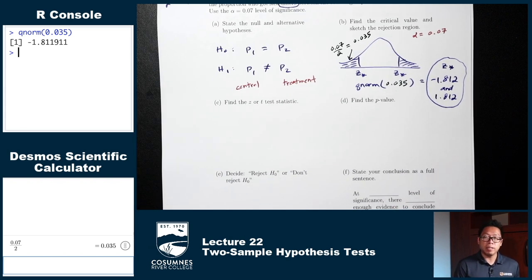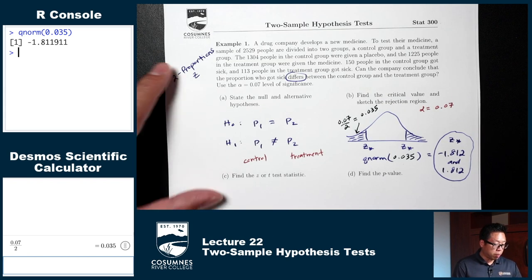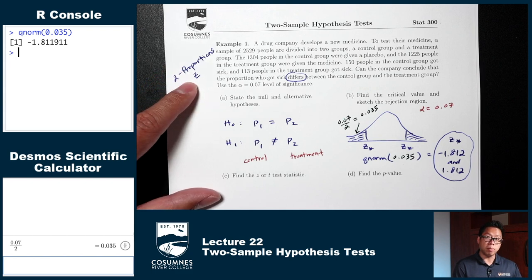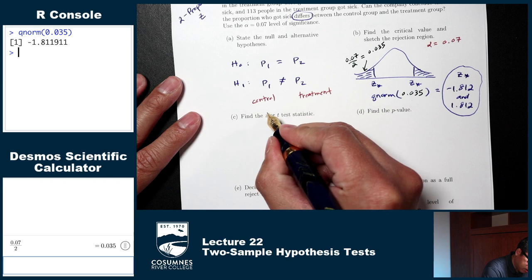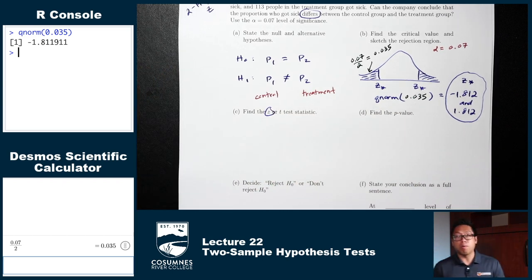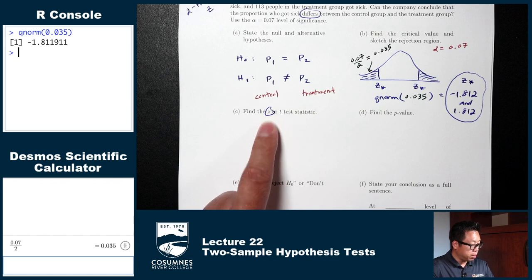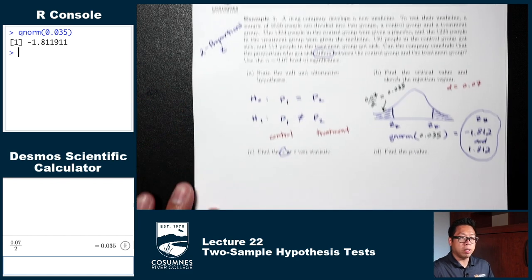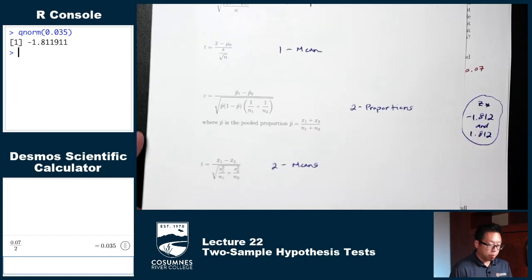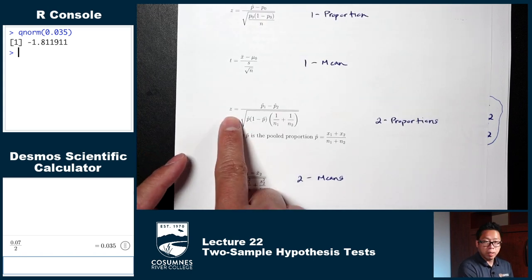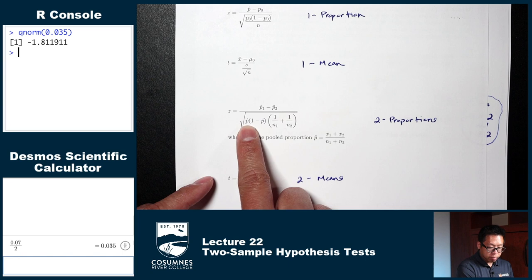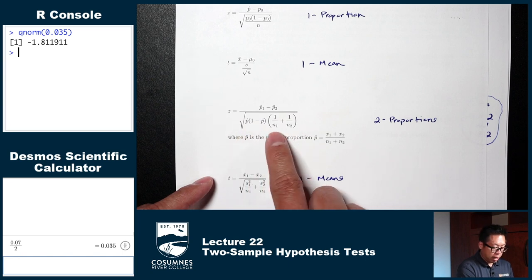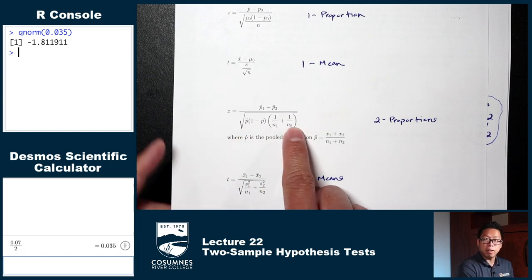Part C: find the Z or T test statistic. We're talking about proportions, so we're looking for Z. This refers to the formulas on the front page. The formula for two proportions has P1 hat, P2 hat, P hat (no subscript), N1, and N2. Let me write all of those down.